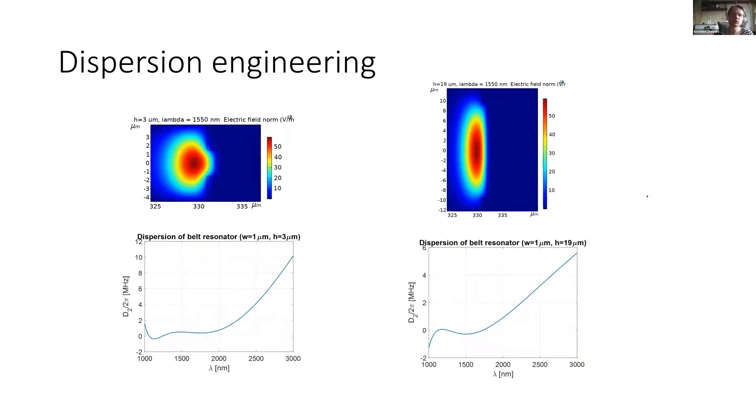Dispersion engineering is simply put: we engineer the geometry of the resonator in order to change the dispersion profile. Here we see we have the belt type resonator with this width is one micron and this height is three, and here is 19 microns. We can see that the dispersion curve is quite different, so we can change these parameters.